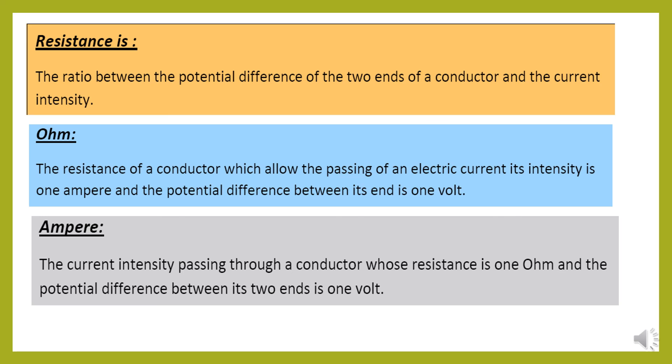Ampere. What is meant by ampere? Ampere measuring unit of current intensity. So we start with the current intensity passing through a conductor whose resistance is one ohm and the potential difference between its two ends is one volt.